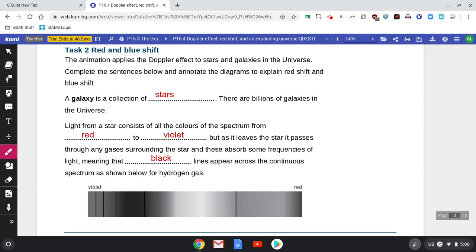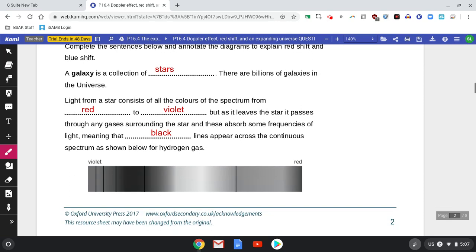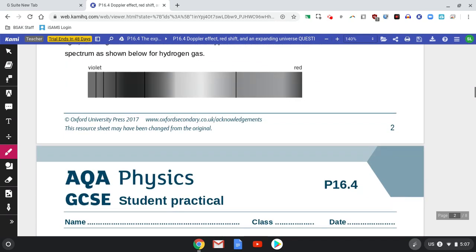Because stars are made of hydrogen. Now if this is the hydrogen spectrum that we expect to see, if it's red shifted, if the star or galaxy we're looking at is moving away, then these lines will be shifted towards the red end of the spectrum.